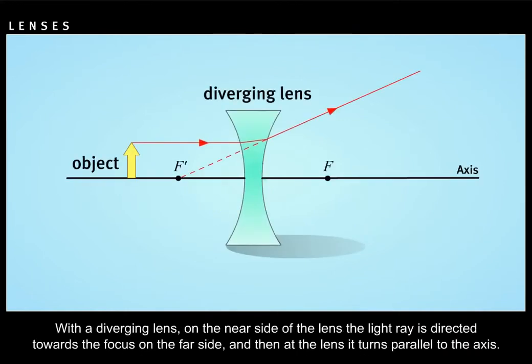With a diverging lens, on the near side of the lens, the light ray is directed towards the focus on the far side, and then at the lens, it turns parallel to the axis.